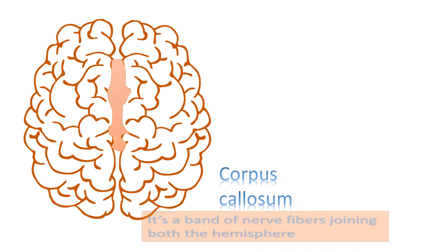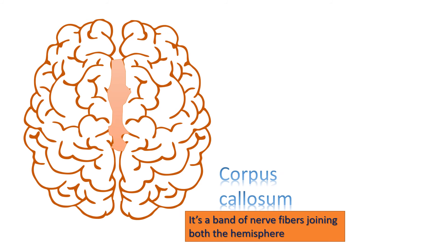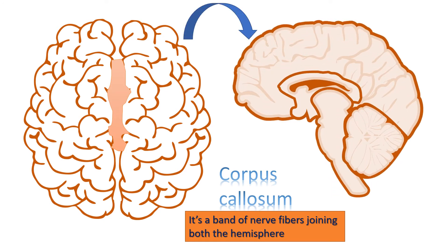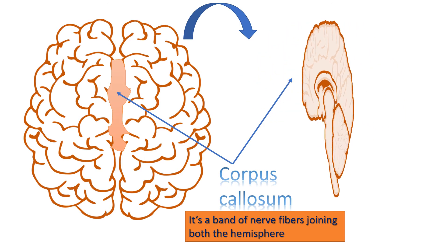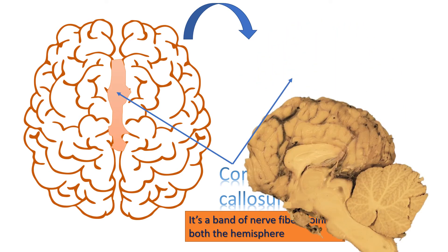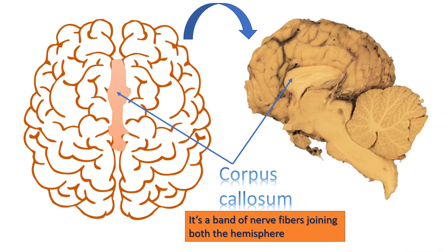The corpus callosum is a band of nerve fibers joining both hemispheres. If we take a cut section of the brain, one can easily find the corpus callosum. It connects the two halves of the brain and delivers messages from one half to the other.